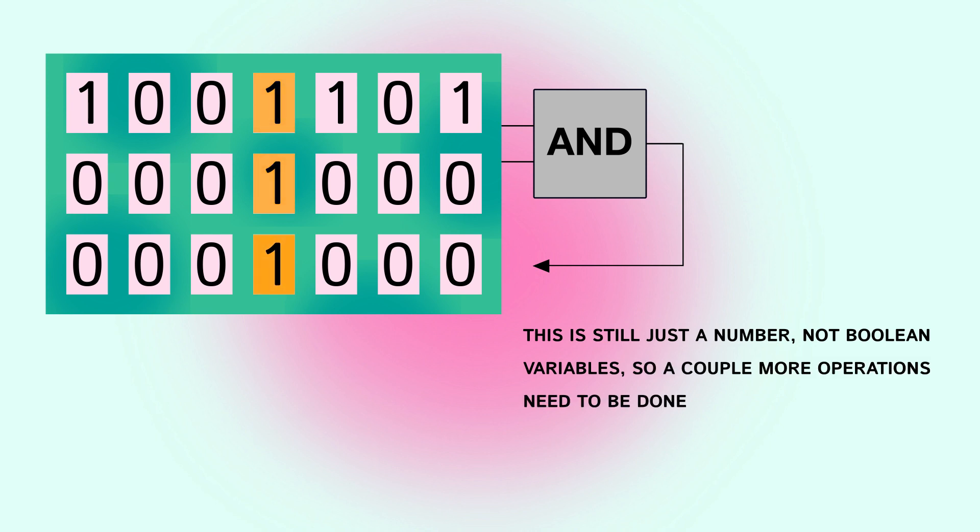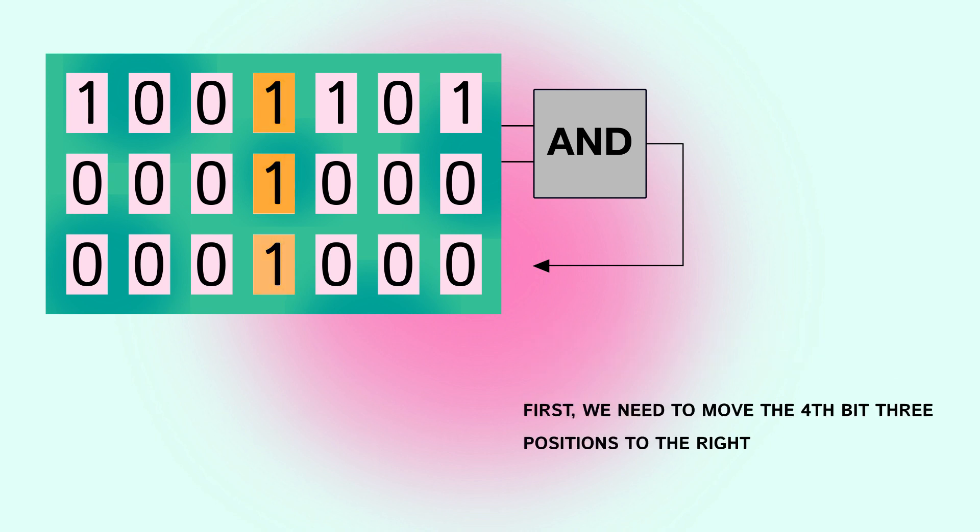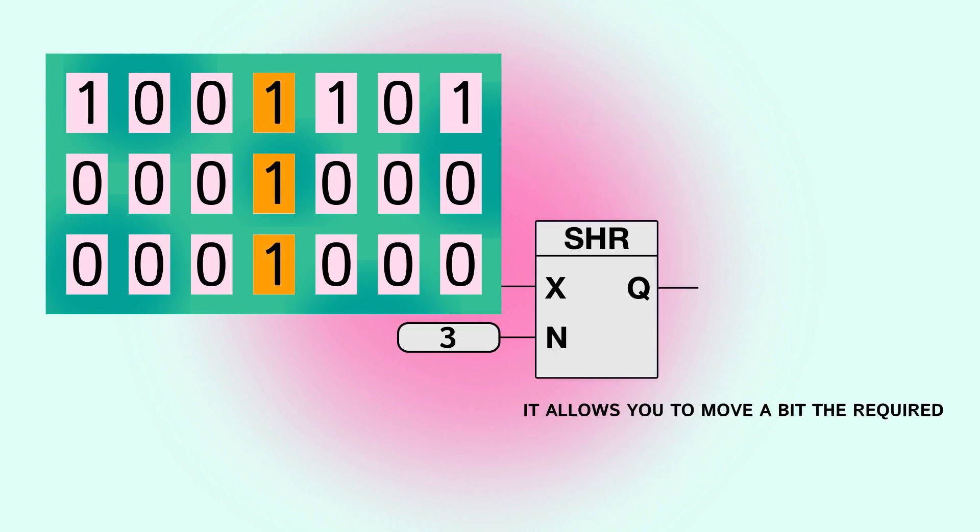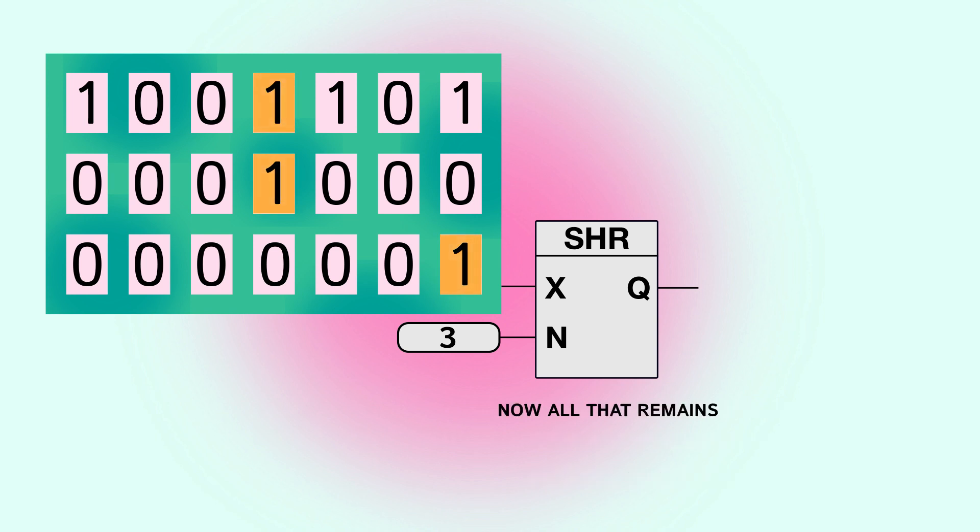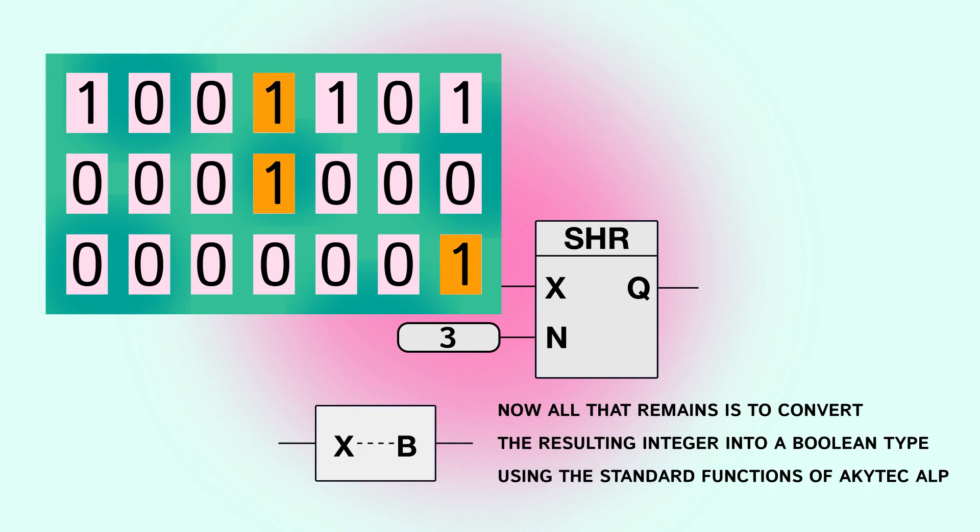So a couple more operations need to be done. First we need to move the fourth bit three positions to the right so that it ends up in the youngest bit. This will be helped by the right shift function. It allows you to move a bit the required number of positions to the right and the three cells will be filled with zeros. Now all that remains is to convert the resulting integer into a boolean type using the standard functions of architect ALP.